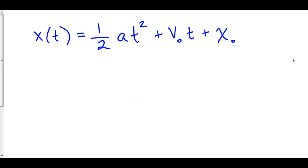So in physics, if you have constant acceleration, this is your position function. x of t is equal to one half at squared plus v-naught t plus x-naught, where a is a constant, v-naught is your initial velocity — that's a constant — and x-naught is your initial position, which is also going to be a constant. So the only variable that we have is t.